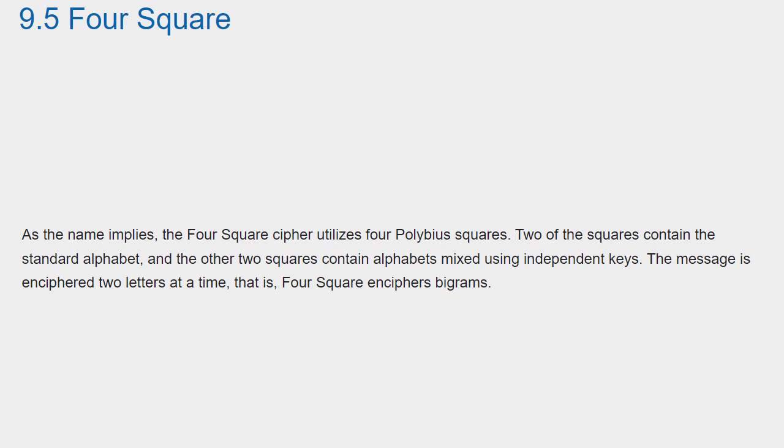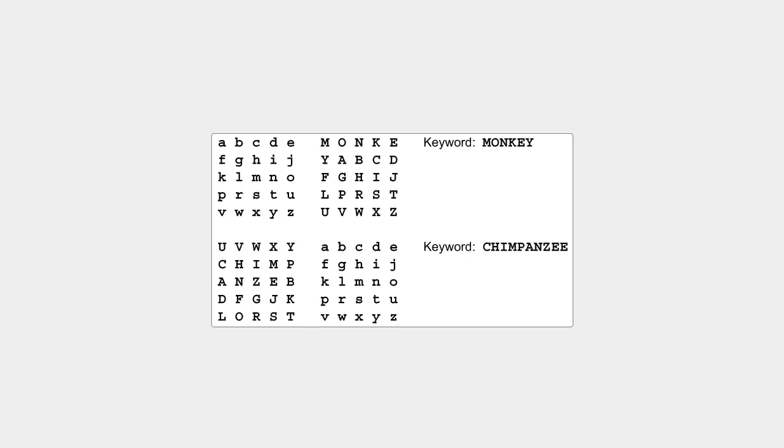As the name implies, the Four Square cipher utilizes four Polybius squares. Two of the squares contain the standard alphabet and the other two squares contain alphabets mixed using independent keys. The message is enciphered two letters at a time. That is, Four Square enciphers bigrams. Here is a sample arrangement.